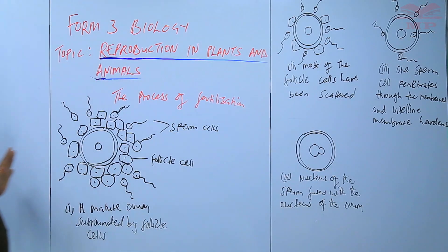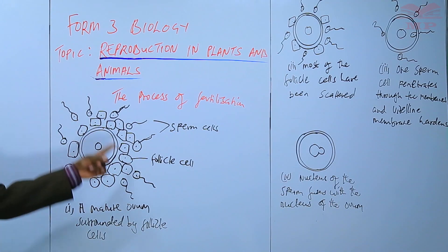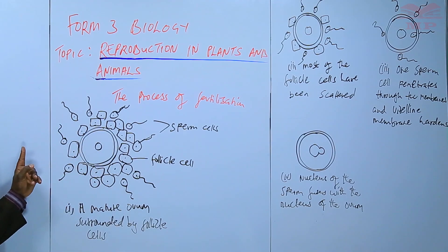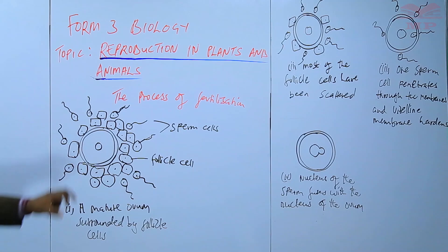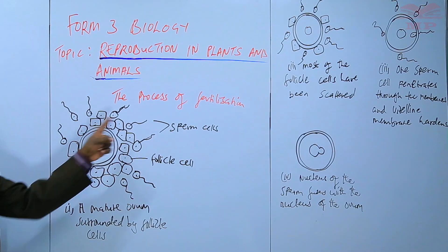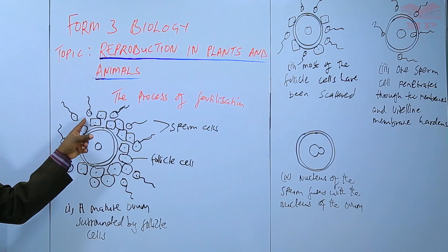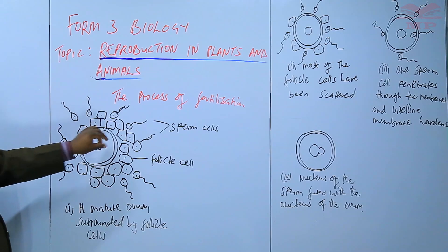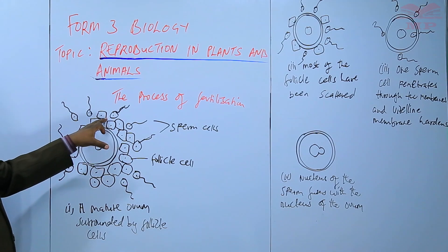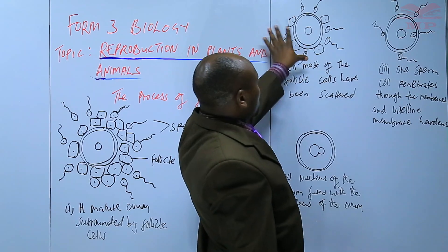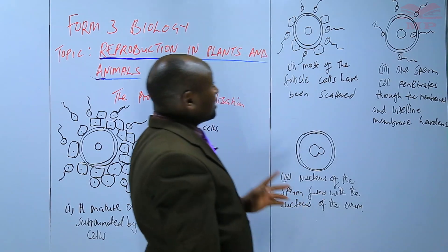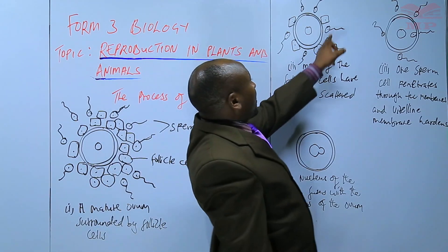The process starts with many follicle cells surrounding the ovum. Then, the sperm cells release the lytic enzymes that start scattering the follicle cells. In the second diagram, we have seen that most of the follicle cells have been scattered, it's only a few that are remaining.